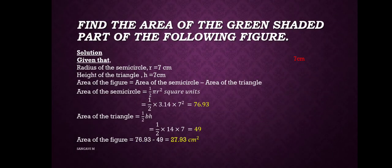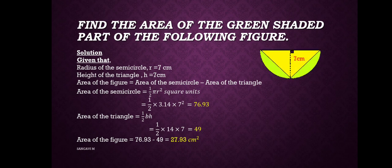Second problem: Find the area of the green shaded part of the following figure. This is our figure. It's a combined figure, a combination of a triangle and semicircle. The radius of the semicircle and height of the triangle are both the same. r equals 7 and h equals 7 centimeters.